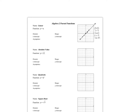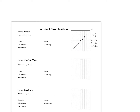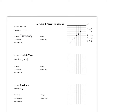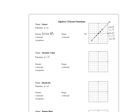Domain has to do with your x values. If we collapse this graph down and flatten it onto the x-axis, every x value would be used — so that's all real numbers. When I write my domain in set notation: x such that x is an element of all real numbers. In interval notation, we read left to right, so it goes from negative infinity to positive infinity.